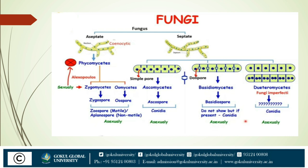Based on septate or aseptate, fungi are further classified into classes. Aseptate is further classified into phycomycetes, whereas septate is further divided into three classes based on pore structure: simple pore, dolipore, and imperfect. Hyphae with simple pores are classified into ascomycetes. Hyphae with dolipores are classified into basidiomycetes. Imperfect hyphae are classified into deuteromycetes.